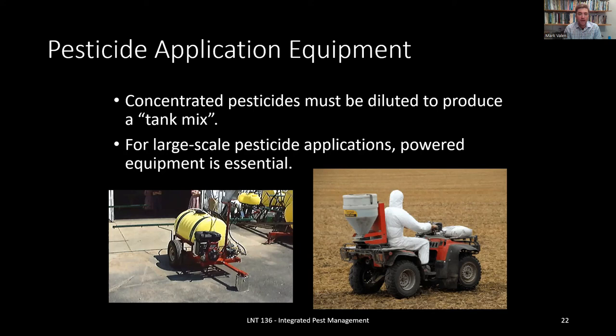Now, this is just a general overview of the various types of equipment, the scales, and the types of considerations to have when applying pesticides. Obviously, each scenario, each plant, each pest, and each garden will have its proper answer for applying chemical pesticides. This is the introduction to what you need to know. Next up, we're going to talk about the laws and the regulations regarding licensure, certification, and safety.